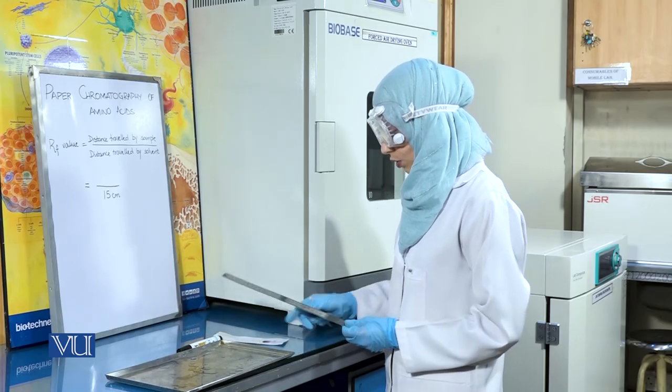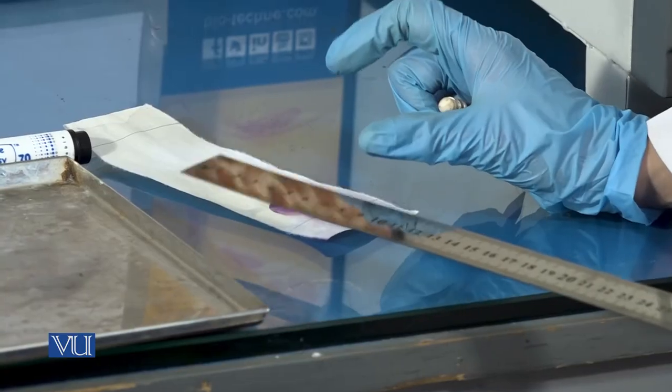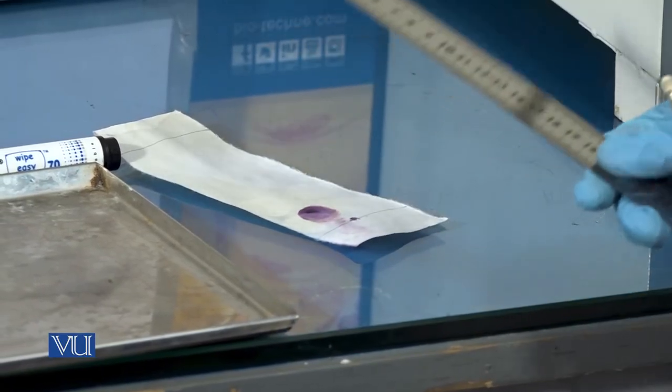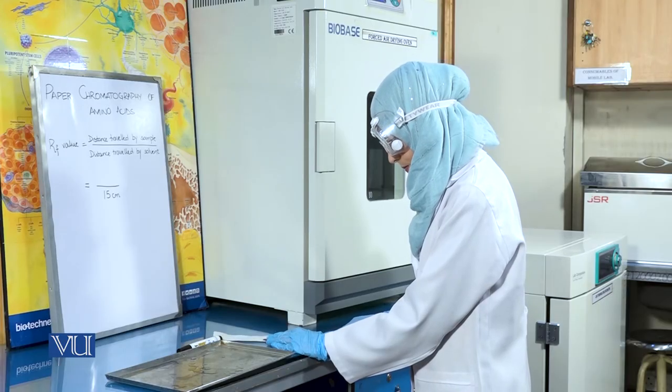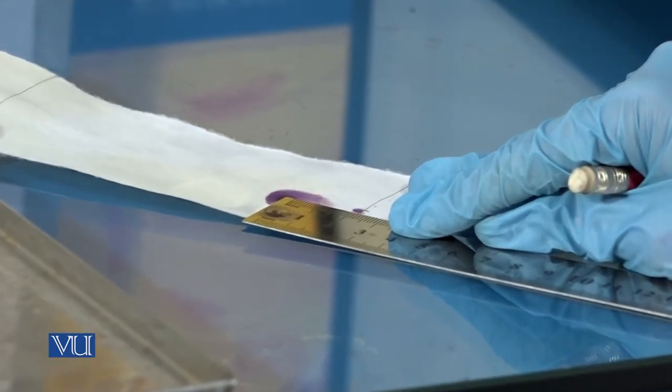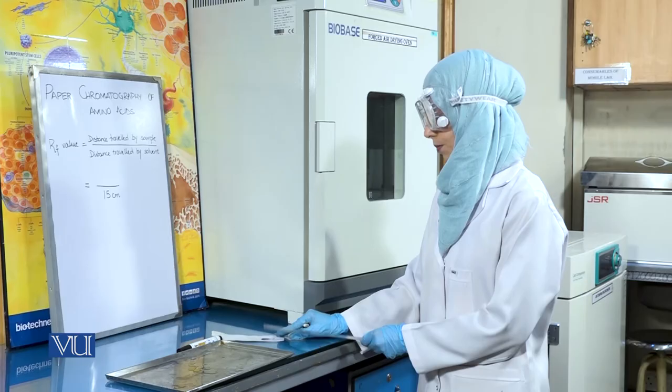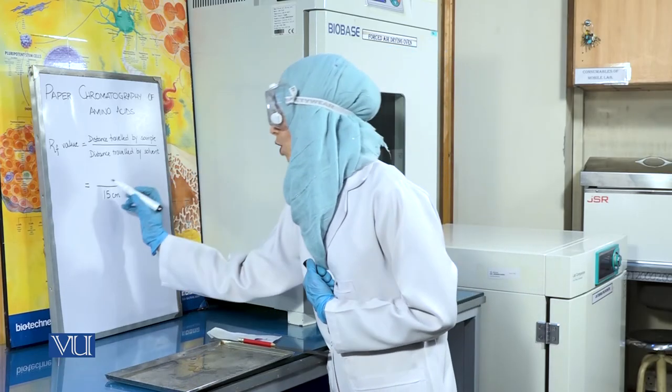We will then calculate the distance travelled by the spot or sample on the filter paper. We will measure the distance from the centre of the spot. This comes out to be 2.1 cm for our sample.